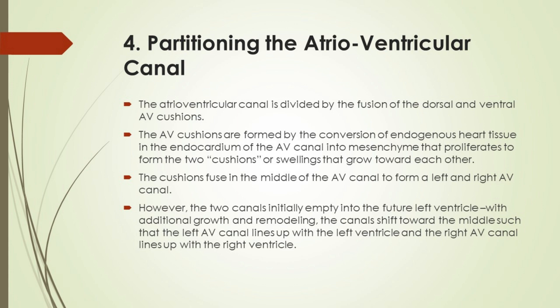Partitioning the atrioventricular canal: The atrioventricular canal is divided by the fusion of the dorsal and ventral AV cushions. The AV cushions are formed by the conversion of endogenous heart tissue in the endocardium of the AV canal into mesenchyme that proliferates to form two cushions or swellings that grow toward each other. The cushions fuse in the middle of the AV canal to form a left and right AV canal. The two canals initially empty into the future left ventricle; with additional growth and remodeling, the canals shift toward the middle such that the left AV canal lines up with the left ventricle and the right AV canal lines up with the right ventricle.